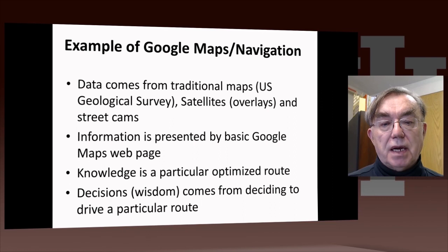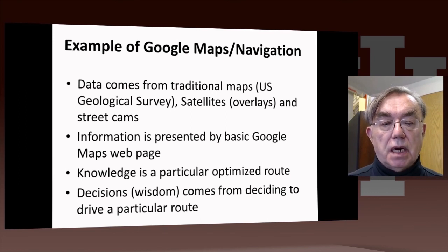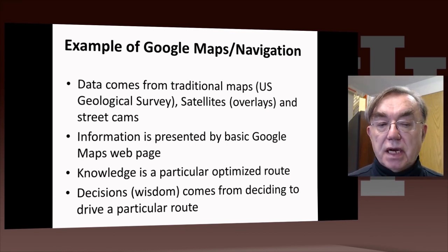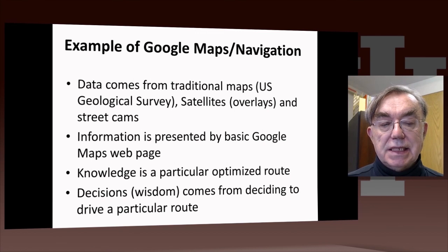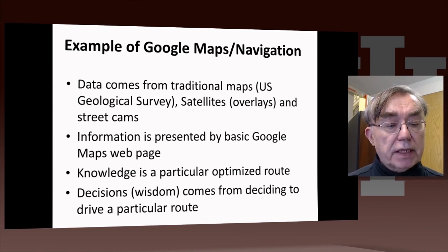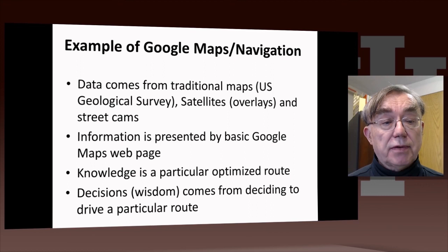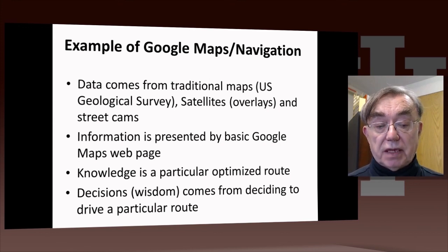Here's an example of this pipeline for a simple case: Google Maps or Microsoft Maps and navigation. The maps are originally built from data — from satellites providing nice overlays, street cams telling you what's going on, and the USGS, which is effectively information. That map data is presented as information by the Google Maps webpage. Knowledge comes when you press the button asking for the route from position A to position B — that route is knowledge. Then you decide, based on different routings presented to you, what you're going to do — that's your decision.